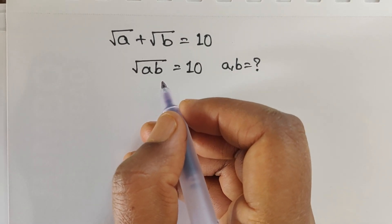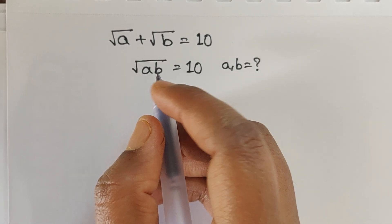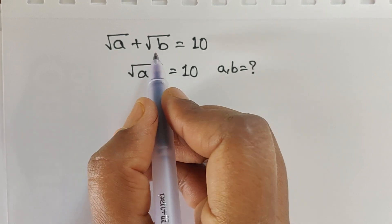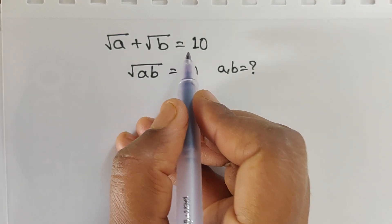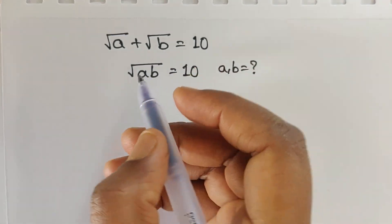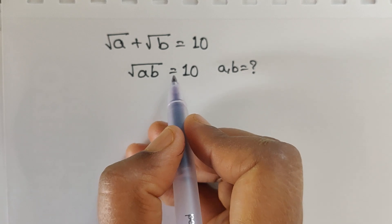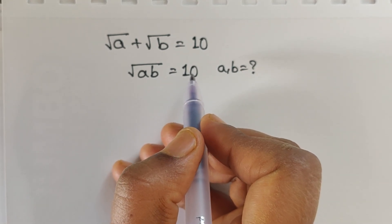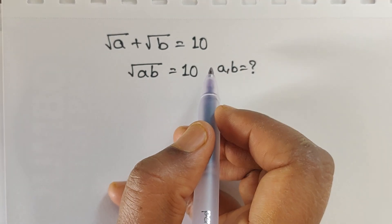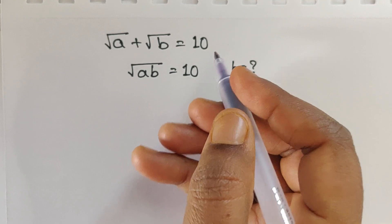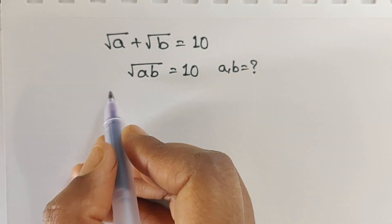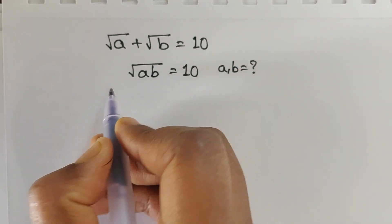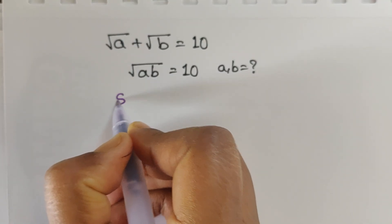Hello everyone, welcome back to our channel. Here we have one problem: square root of a plus square root of b equals 10, and square root of a times b equals 10. In this problem we have to find the values of a and b. Let's see the solution.